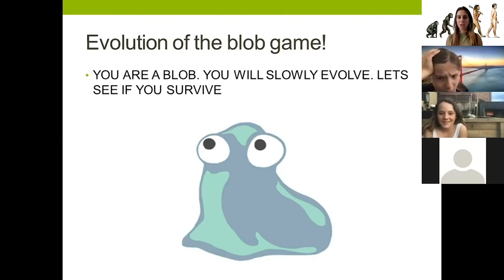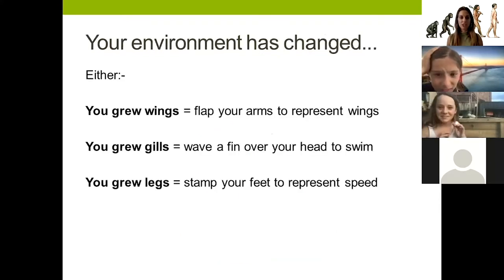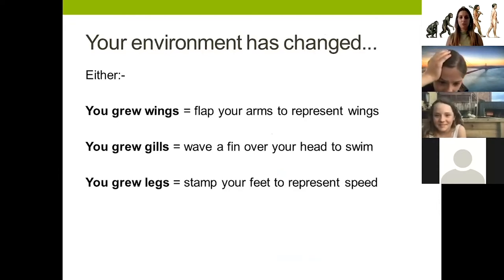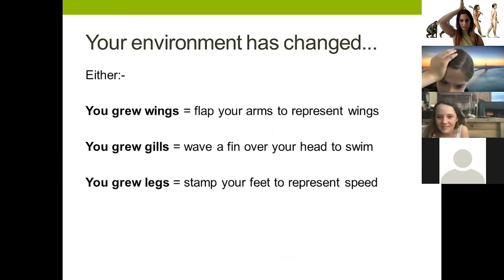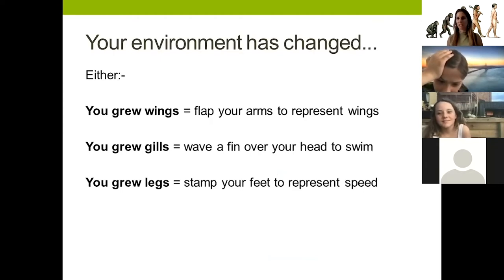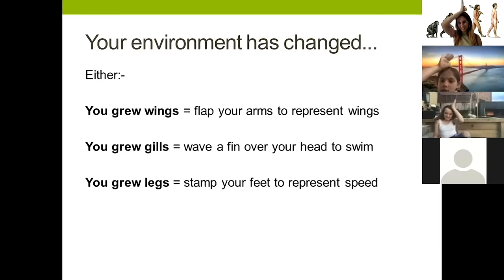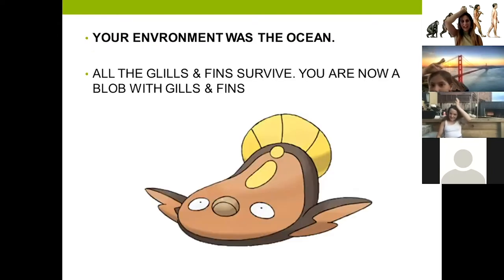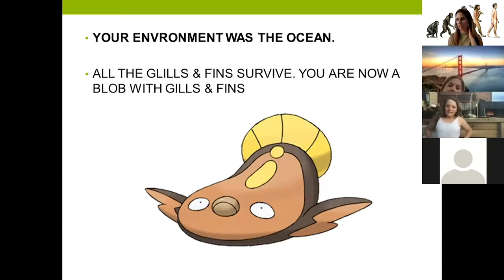In this game we're all a blob, and you will slowly evolve - let's see if you survive. Your environment changed: you either grew wings - flap your arms to represent wings - or you grew gills - wave a fin on your head to represent gills - or you grew legs - stamp your feet to represent speed. Everyone chose gills. Your environment was the ocean, so all the gills and fins survived. You are now a blob with gills and fins!